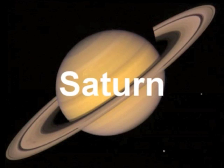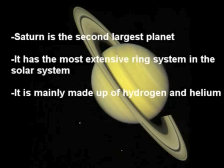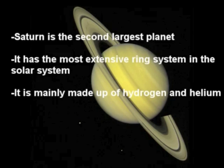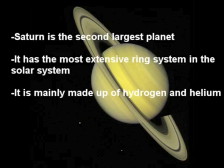After Jupiter is Saturn, the second largest planet. It has the most extensive ring system in the solar system, with over a thousand rings composed of ice and debris. It is similar to Jupiter in composition, in that it is mainly made up of hydrogen and helium.